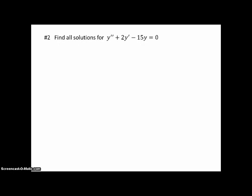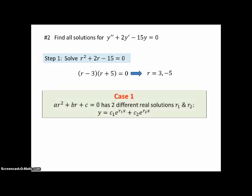Problem 2: find all solutions for the differential equation. It's of the type we can solve directly using the r² and r technique. Substituting r² for y″ and r for y′, it factors nicely — this is Case 1, two distinct real zeros. The general solution is y = c₁e^(3x) + c₂e^(−5x). Since this is a second-order differential equation, we end up with two unknown constants c₁ and c₂; initial conditions would allow us to solve for them.